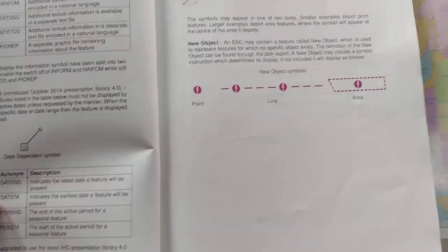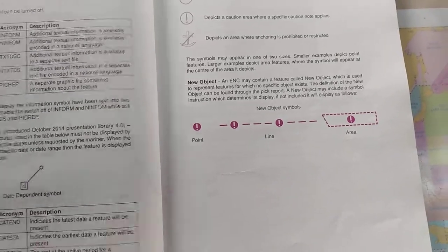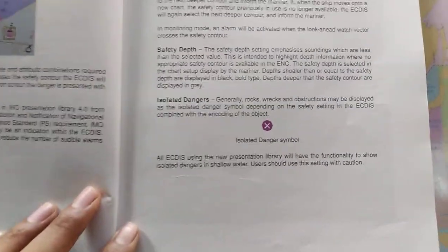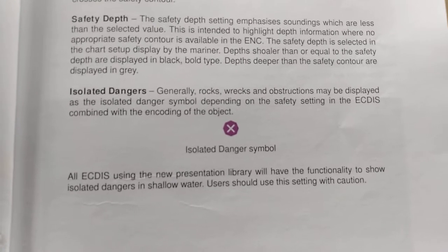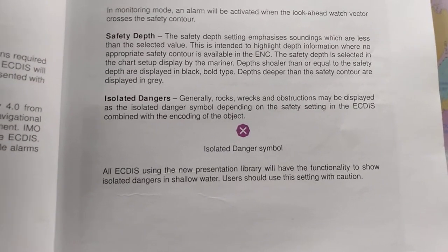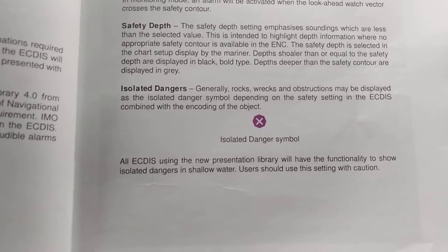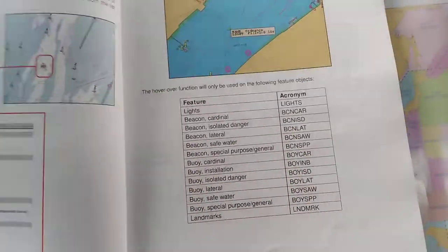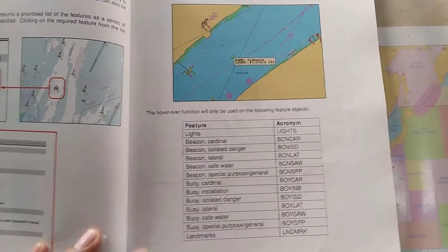On board, you will see this publication and check what the symbols in ECDIS are. At least know the isolated danger symbol — this is important and generally they ask you to draw it. Some ECDIS symbols are important. Since everything is now ECDIS and paper charts are being phased out, you should know the publications, how to update, and the symbols.